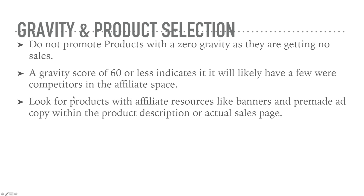A gravity score of 60 or less indicates that it will have fewer competitors, so somewhere between 1 and 60 might be a good place to start. It's great to look for products to affiliate market that already have banners or premade ad copy that you can just use rather than having to make it yourself.